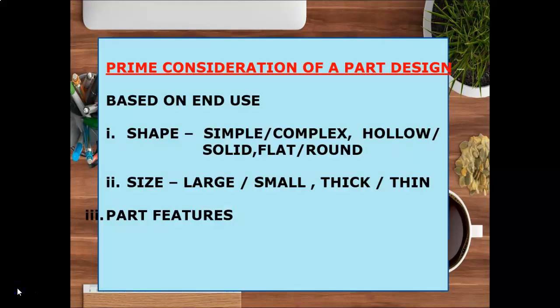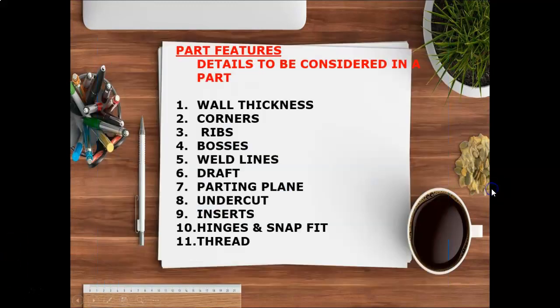Now we look at the prime considerations of part design. Based on the end use, we need to design the shape — whether simple or complex, hollow or solid, flat or round. For the size of the part, you need to consider the dimensions and whether the wall is thin or thick. The next consideration is part features.